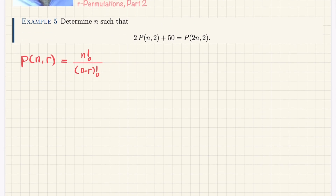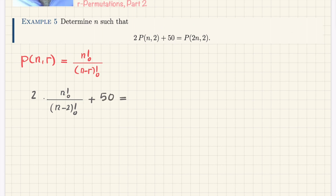Using this formula, I want to solve this equation. I have to replace with the appropriate relation and try to solve it. I write 2 instead of p and use this formula: instead of n I put n, and instead of r I put 2, so it becomes n factorial in the numerator and n minus 2 factorial in the denominator. Then on the right-hand side, 2n plays the role of n and 2 plays the role of r, so in the numerator I write 2n factorial, divided by 2n minus 2 factorial.